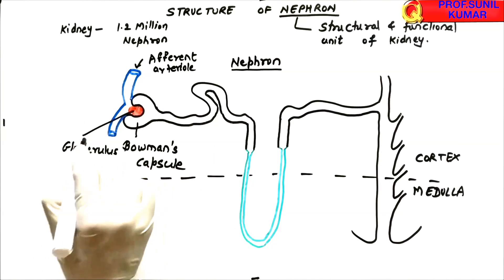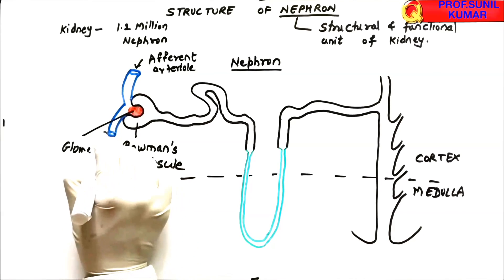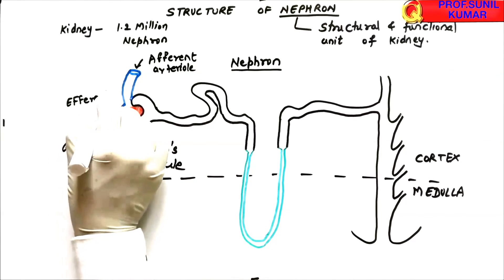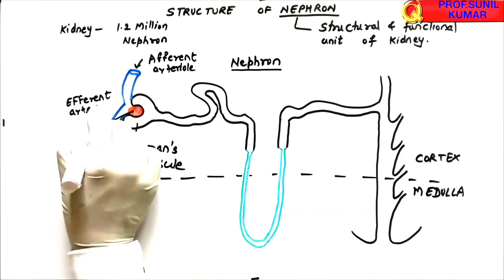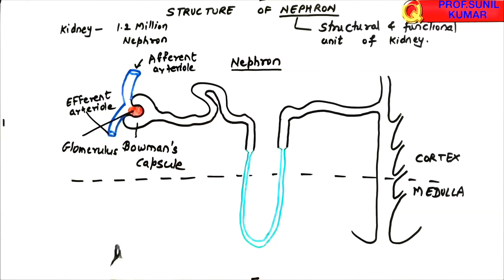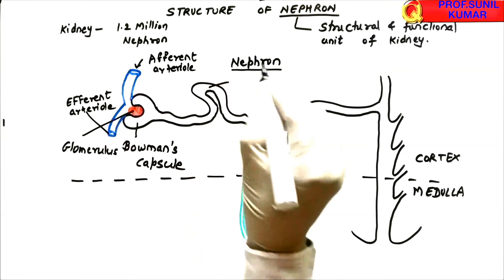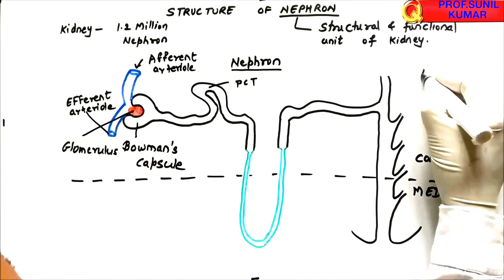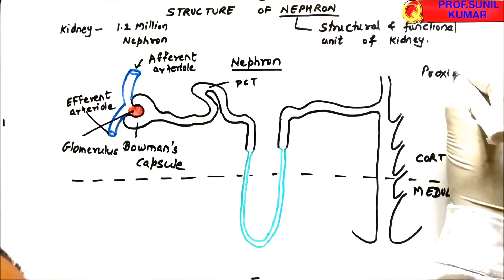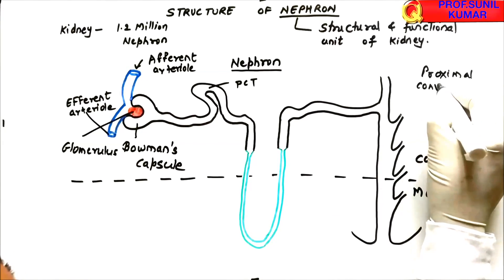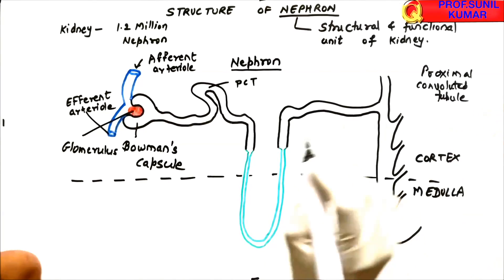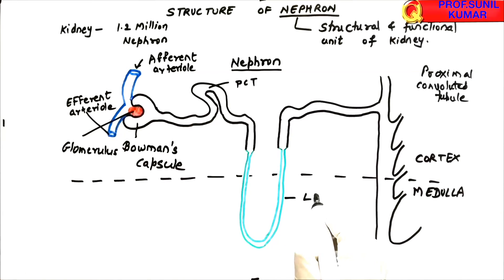The afferent arteriole has a bigger diameter — blood enters the glomerulus through the afferent arteriole. The efferent arteriole is smaller in diameter, and blood leaves the glomerulus through the efferent arteriole. The next tubule is the PCT — proximal convoluted tubule — where 'convoluted' means folded. The thin green line drawn is called the loop of Henle, or LOH.